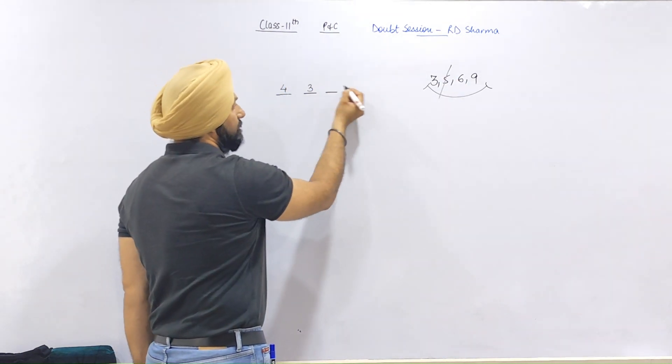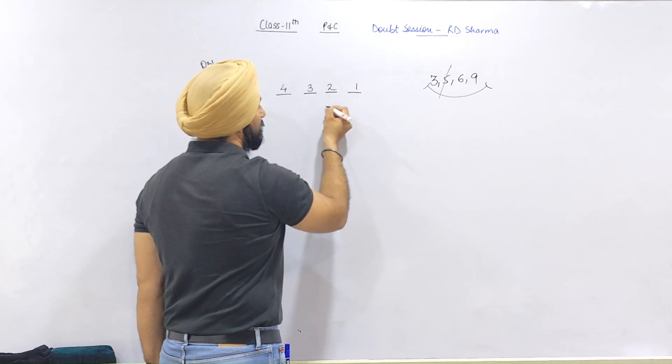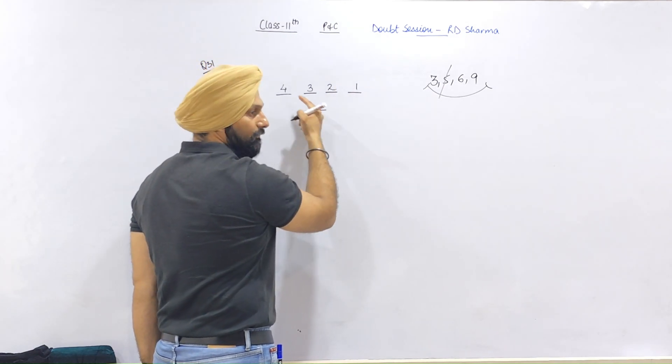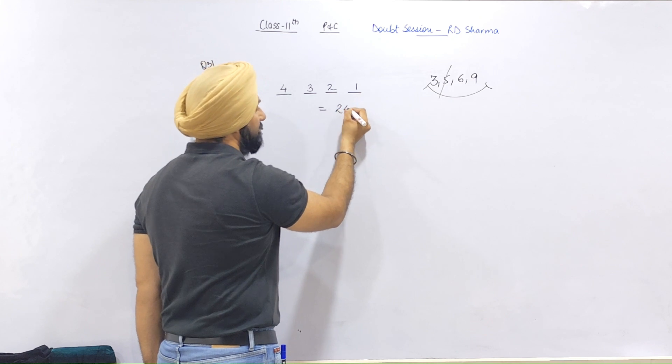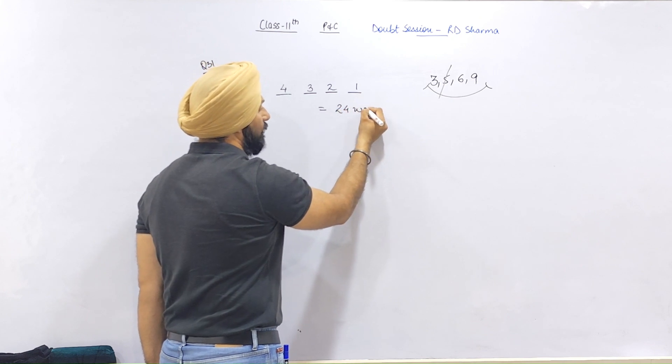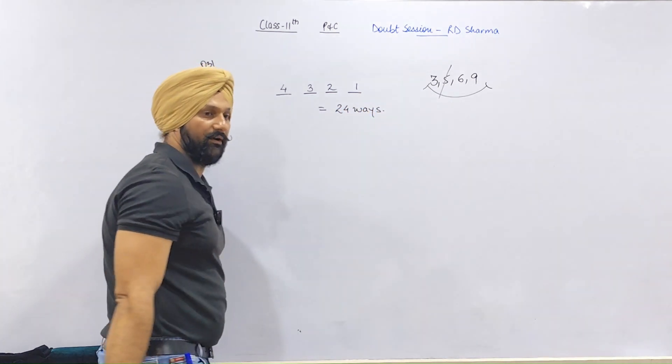The answer is 4 × 3 × 2 × 1, so the answer is 24 possible passcode sequences.